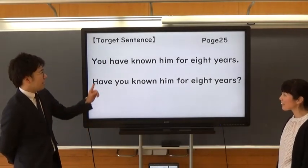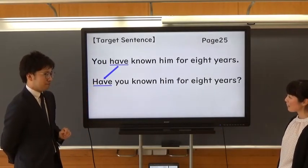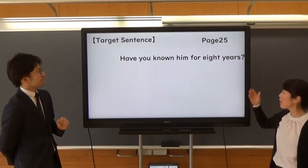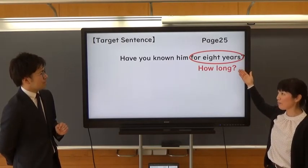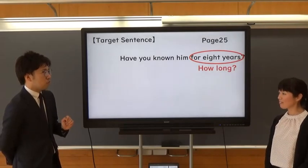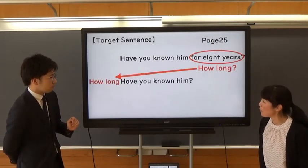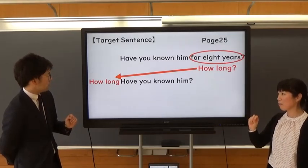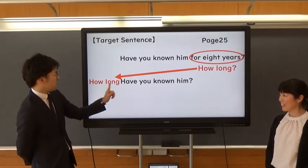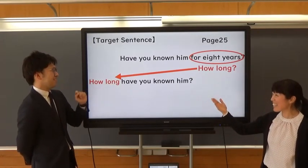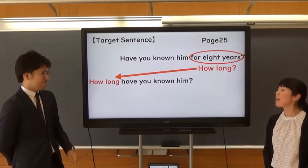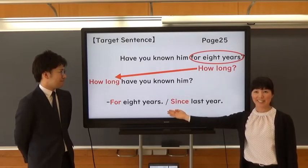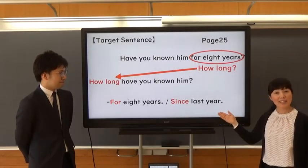How did you know? 'Have' comes to the front. You have studied hard. Now, let's write this. Please use 'how long.' 'How long have you known him?' That's very good. But you have one mistake. Please check. Sorry. This one? Yes. That's perfect. Good job. Now, the answer for this question is 'for 8 years' or 'since last year.'